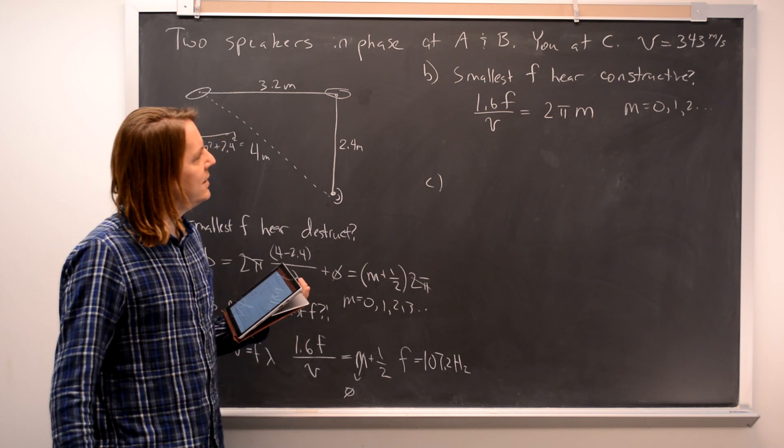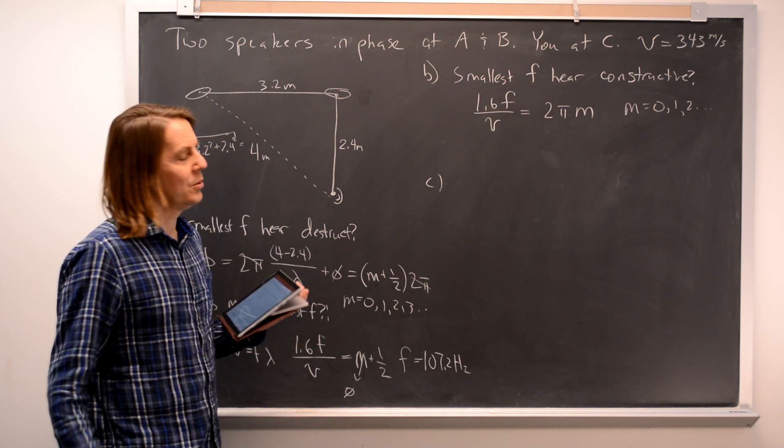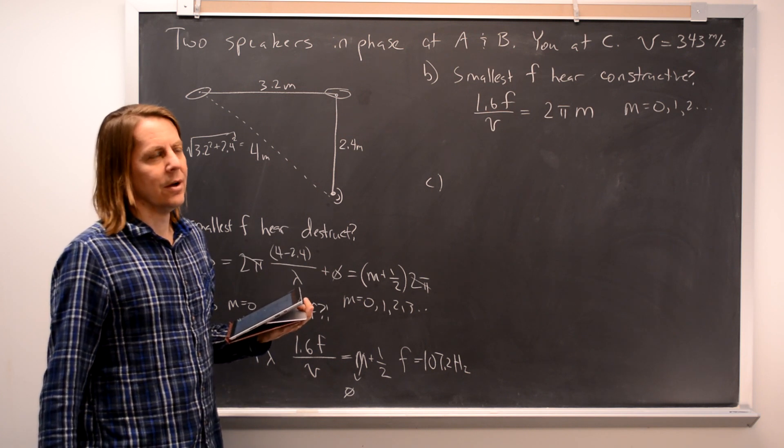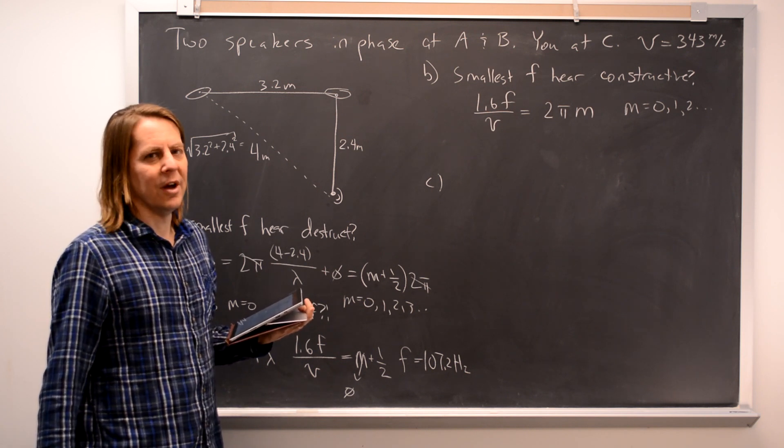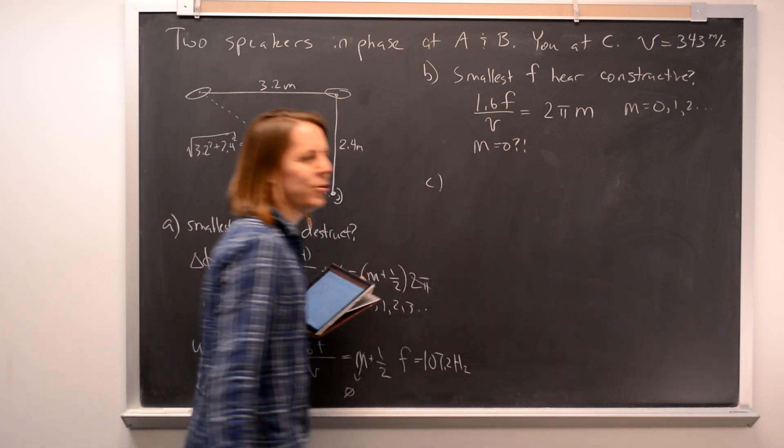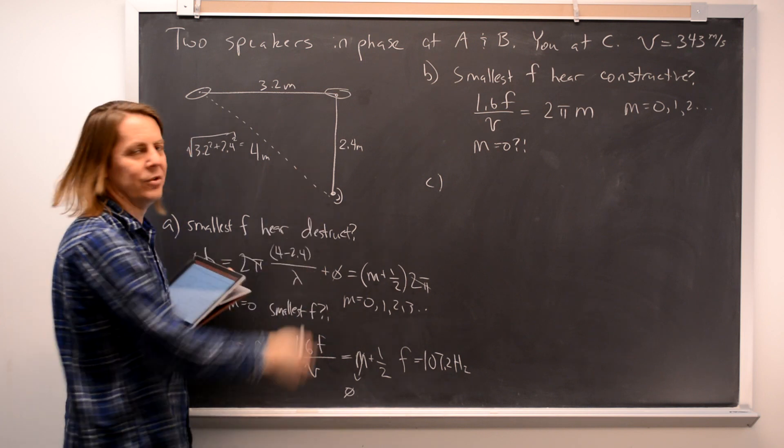We just want the condition rather than destructive to be constructive. So that must equal 2π times M where M equals 0, 1, 2. So let's see. You want the smallest F. So again, we have to think about the integer. What should it be?